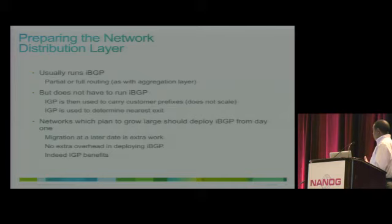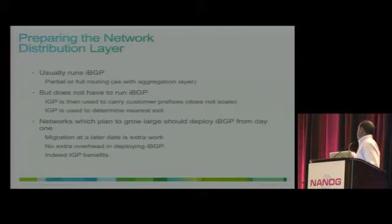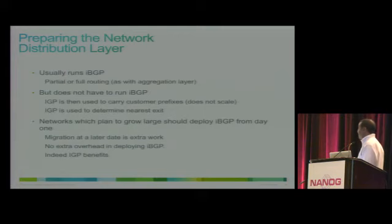The distribution layer usually runs IBGP. It may carry the full table or just partial, depending on whether there is a possibility it may become a transit. If it will become a transit, it has to carry the full internet table. If there is no way the distribution layer will be a transit, then partial will be sufficient.